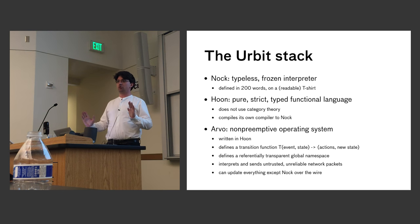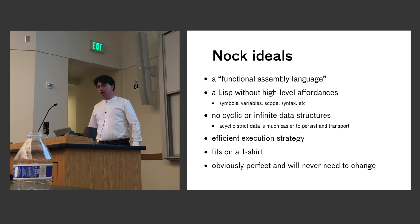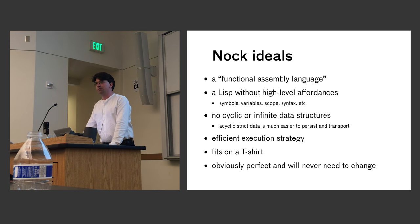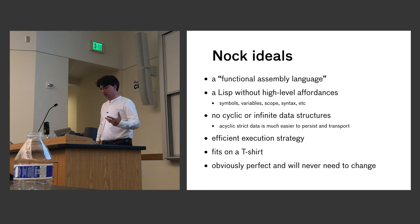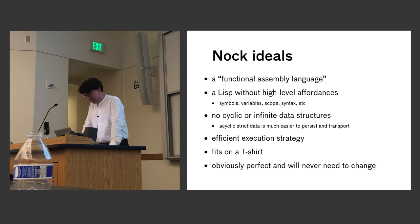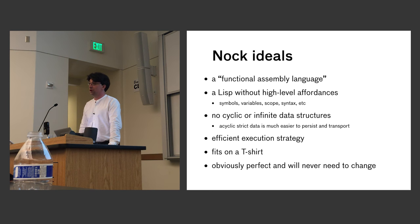I sometimes call Nock a functional assembly language. You can program in Nock, but there are no symbols, so you're typing numbers and doing tree geometry by hand — very much like writing assembly language. It's a Lisp without any of the high-level tools. Key point: no cyclic data structures, no laziness, no infinite data structures. Nock is an interpreter which cannot create cycles. No tracing garbage collectors. If you look at any persistent system or database, you'll see acyclic data structures everywhere.